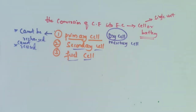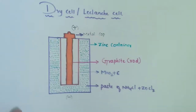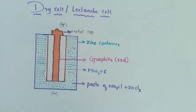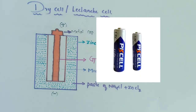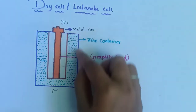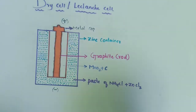Now coming to the primary cell — in this video we are going to learn about the dry cell. Let's look at the diagram of this dry cell or Leclanche cell. This cell is named the Leclanche cell after its discoverer. Looking at the diagram, the outer part is a zinc container.